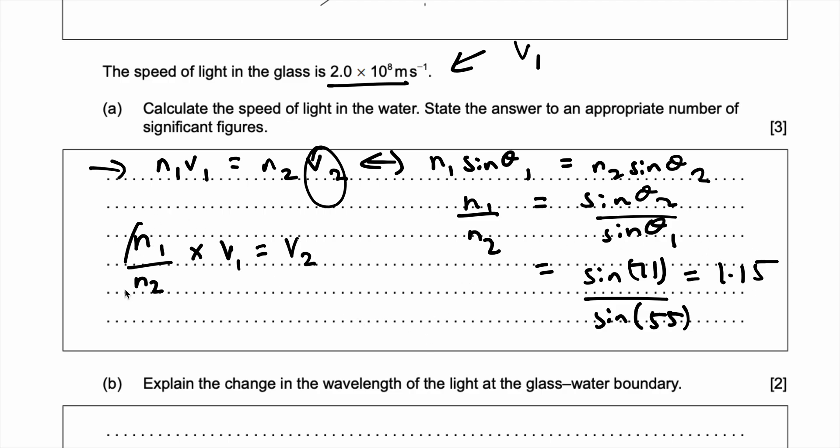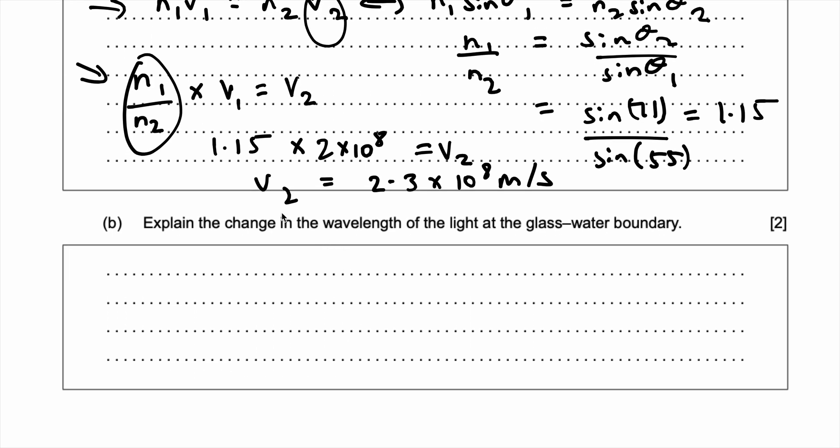Now we just substitute that into this right here. So 1.15 times by the v1 which is 2 into 10 to the power of 8 gives me v2. So v2 if you put this in your calculator comes out to be in the appropriate number of significant figures 2.3 into 10 to the power of 8 meter per second. And now that's the velocity of the light or speed of the light in the water.